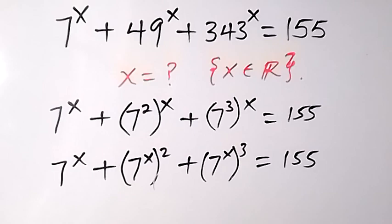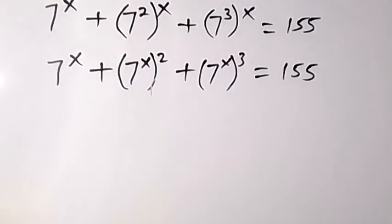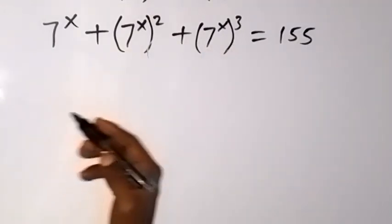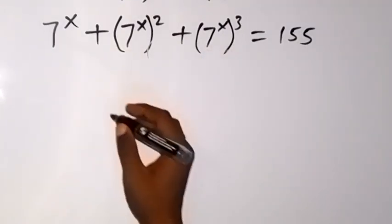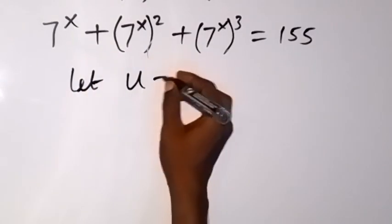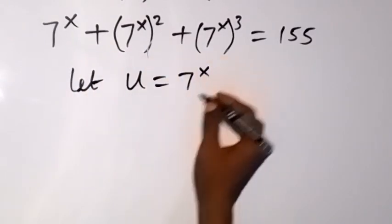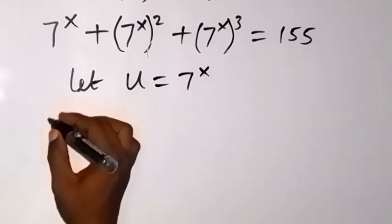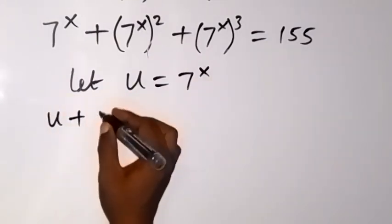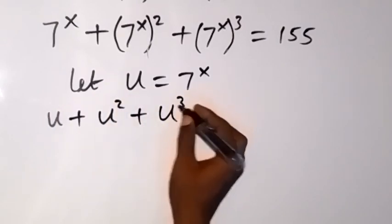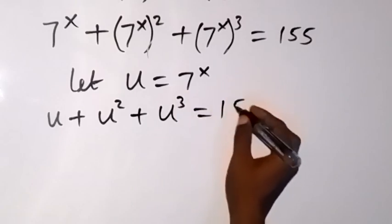We have something common now, which is 7 raised to power x. We can represent that with a letter. Let u be equal to 7 raised to power x. We can now write this equation as u plus u squared plus u cubed equals 155.